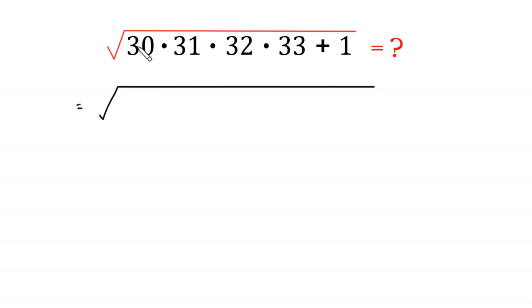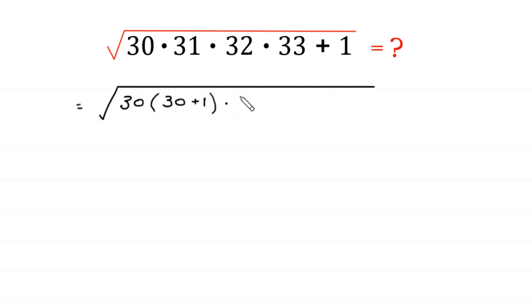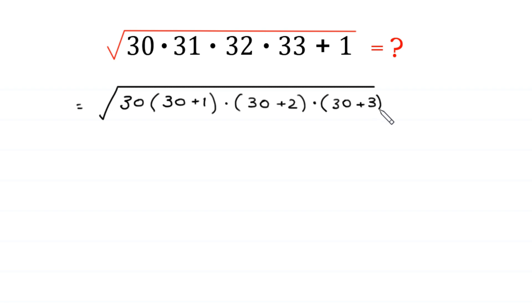We keep 30 as it is, and we can write 31 as 30 plus 1, we can write 32 as 30 plus 2, and we can write 33 as 30 plus 3, plus 1 at the end.